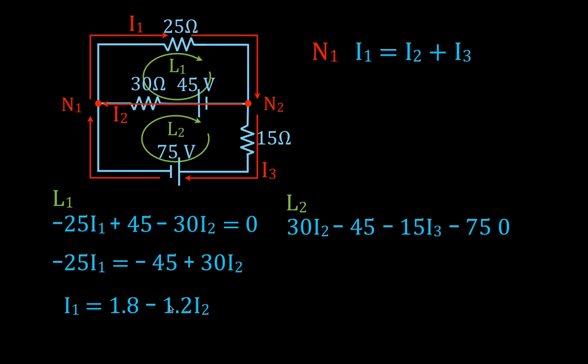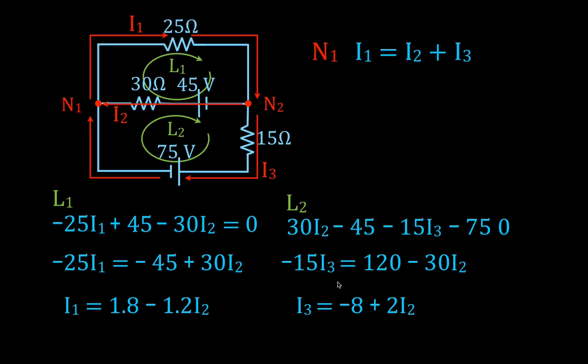Now solving the loop 2 equation for I3: combining minus 45 and minus 75 gives minus 120. Moving to the other side gives 120, plus 30·I2. Dividing all terms by minus 15: 120 divided by minus 15 is minus 8, and minus 30 divided by minus 15 is plus 2. So I3 equals minus 8 plus 2·I2.